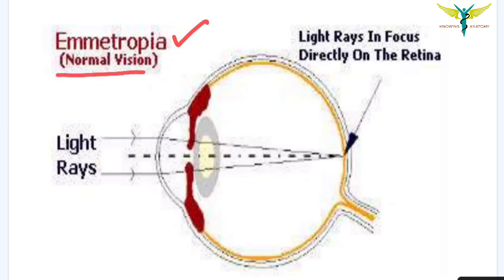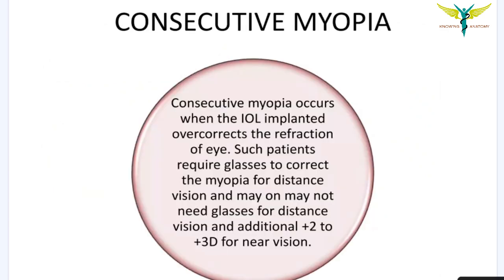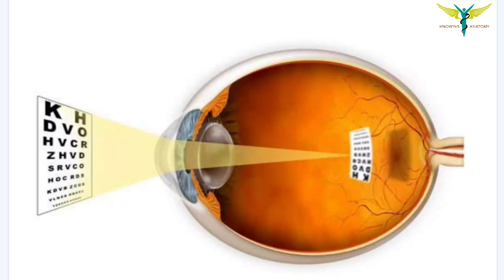Consecutive myopia occurs when the IOL implanted over-corrects the refraction of the eye. Such patients require glasses to correct myopia for distant vision and may additionally need plus 2 to plus 3 diopters for near vision. In consecutive myopia, the image is formed in front of the sensory retina.